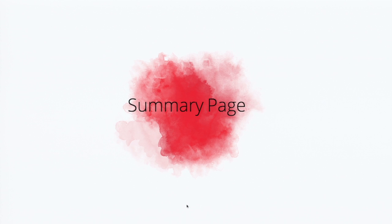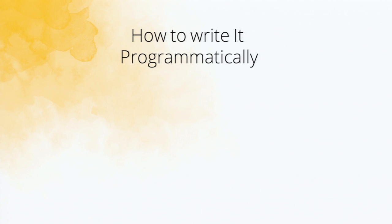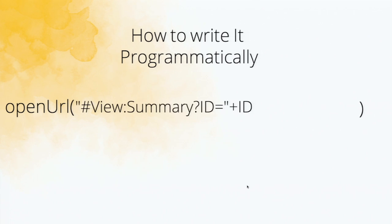Now we are done with the complete workflow. Once the order has been taken, we have to show a summary page to the customer. This is the summary page built using HTML. To make use of the summary page after submission, you can use an open URL task, which will open this view after your submission. Pass the variable URL and your ID, which constructs this HTML page, and mention the params for where to open it — either in the same window or in a new tab.